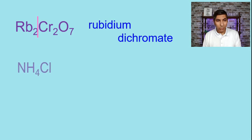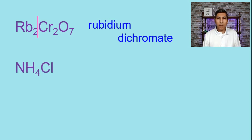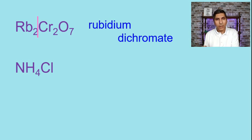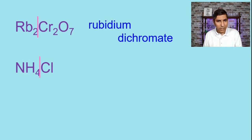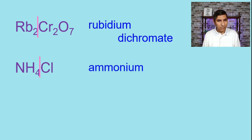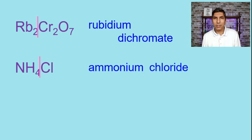Let's try NH4Cl. We recognize that NH4 is a polyatomic ion — one of the very few cations that's a polyatomic ion. So we split it right after the NH4. That's of course called ammonium. And then Cl is chloride. So this compound is ammonium chloride.